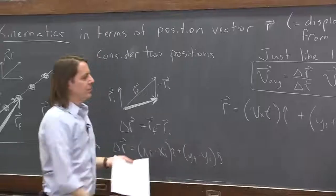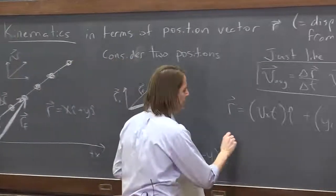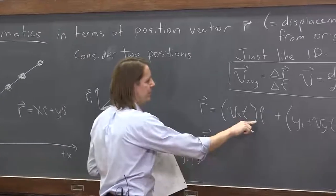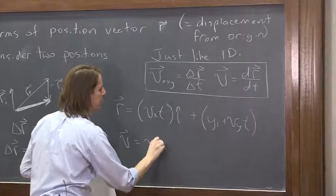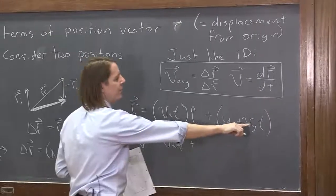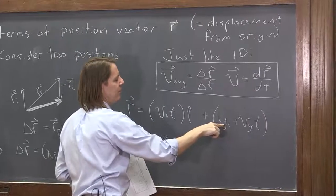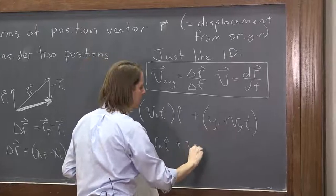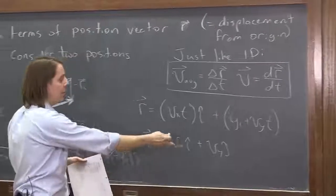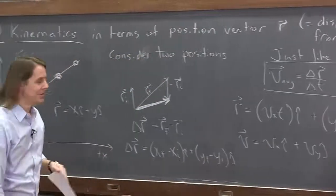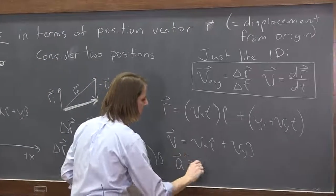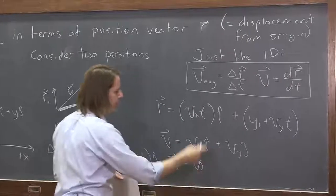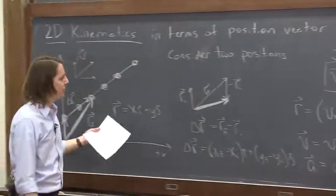Once you have this, you can do lots of things. What's the velocity vector? Oh, that's easy. Just take the derivative. The derivative of vx times t is just vx i hat. What's the derivative of this? The derivative with respect to time: 0, vy j hat. That had better be the velocity vector. In this case, that's very straightforward. What's the acceleration vector? Take another derivative. 0 plus 0, 0. There is no acceleration. This was uniform motion.